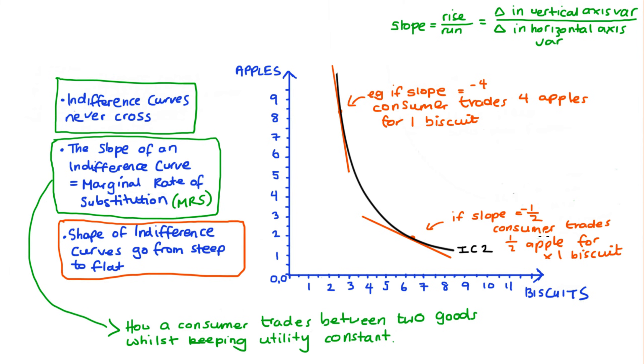On these indifference curves, this feature is due to the fact that we tend to value a good more when it's scarce or when we don't have a lot of it. So up here where I have a lot of apples and not much biscuit, if I lose a large amount of apples, I'm not really that fussed. I only need a relatively small amount of biscuits to make up for that loss.